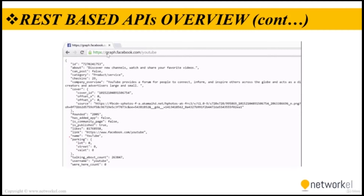JSON is structured data organized according to key-value pairs, the same way an Excel spreadsheet is structured. You can ask a JSON array for specific data — for example, if you want to know how many likes this Facebook page has, you look for the data contained under the key 'likes'. You can see it right there — how many likes YouTube's Facebook page has. All modern programming languages can interpret this JSON response.